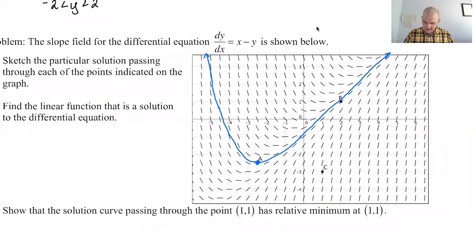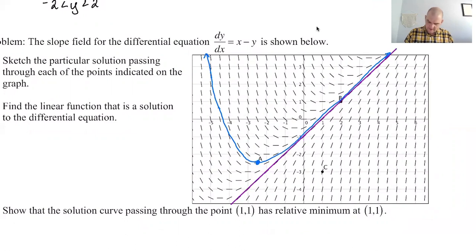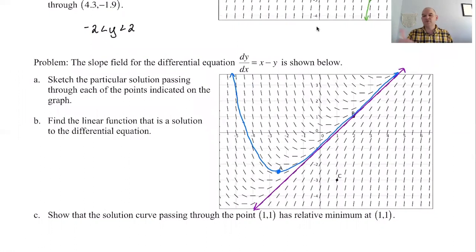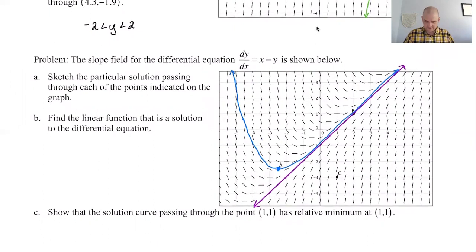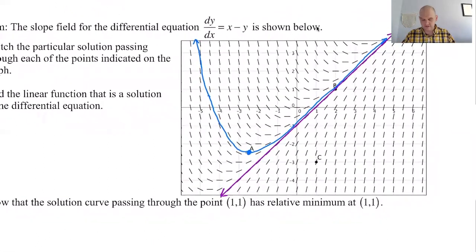For point B, if you drop in exactly at point B, you're on that line. The slope of a linear function is constant, so once you're on that line you're never getting off of it. That would be my solution curve through B.